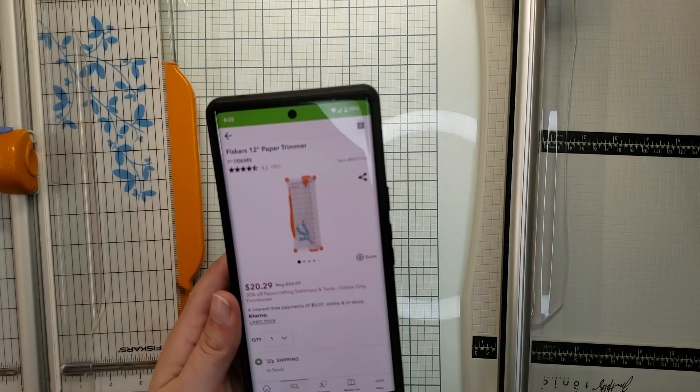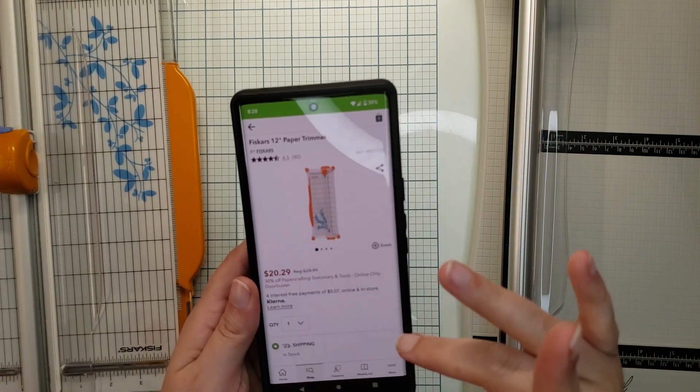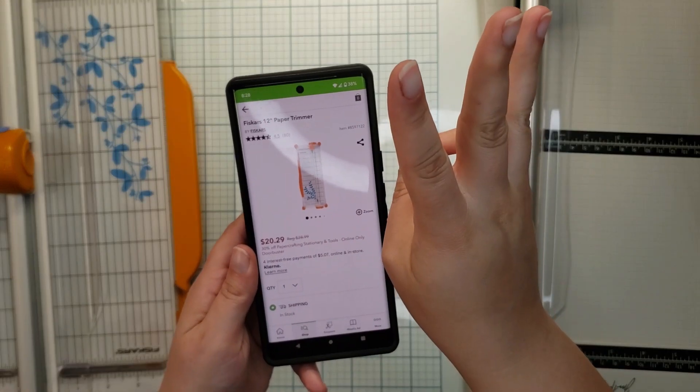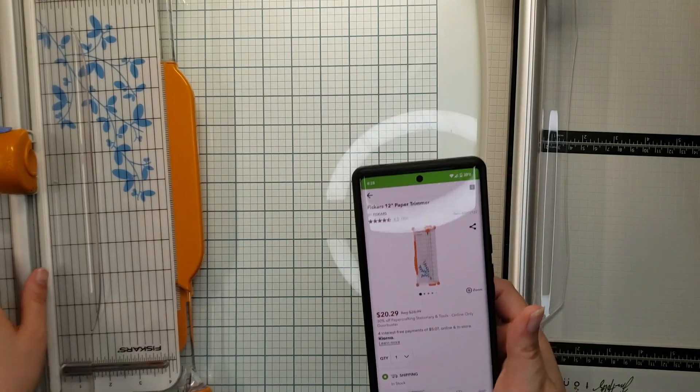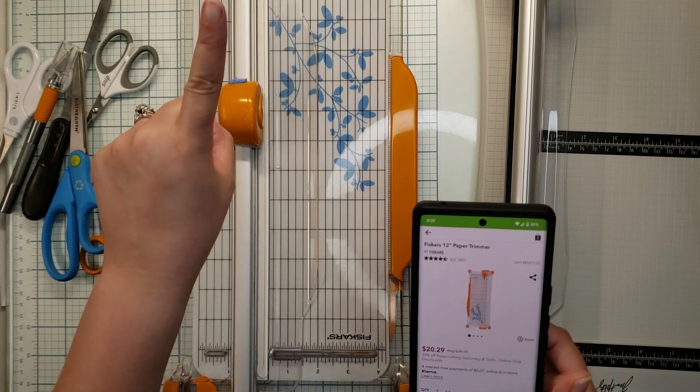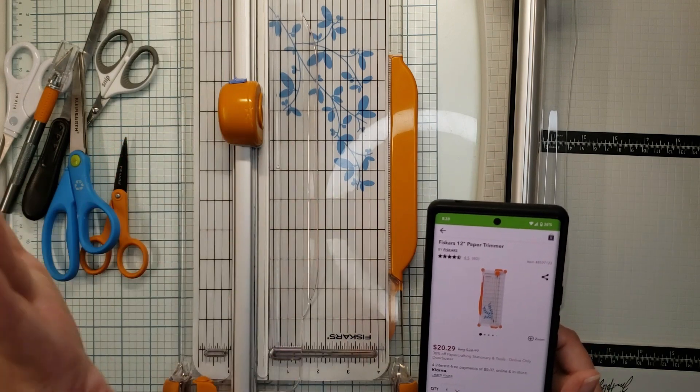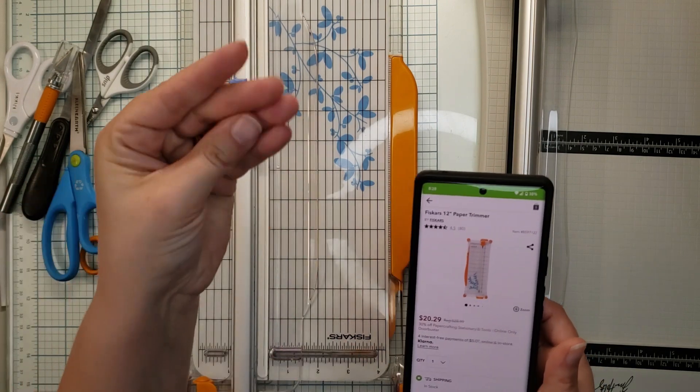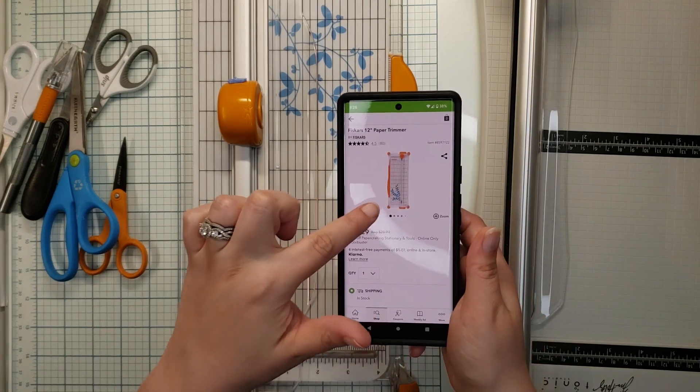Go with your rotary blade trimmer. Your blades last longer, and you don't have to worry about paper fraying. That's what happens with these types of trimmers. I always recommend a rotary blade.